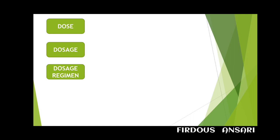Lastly, what is a dosage regimen? A regimen is the schedule of doses of a therapeutic agent per unit time, including the time between doses — for example, every six hours — or when the doses are to be given, such as 8 AM and 4 PM daily. It also includes the amount of medicine, like the number of capsules at each specified time.